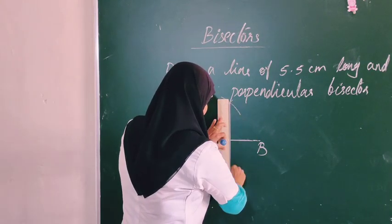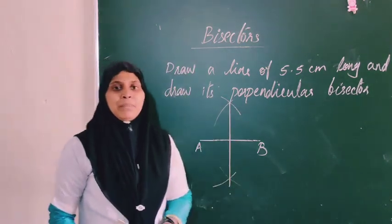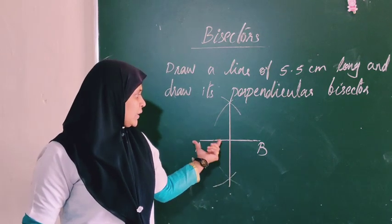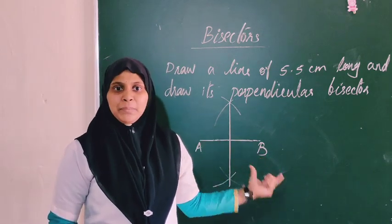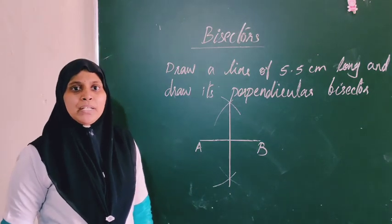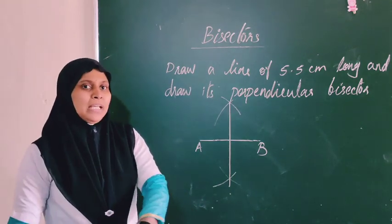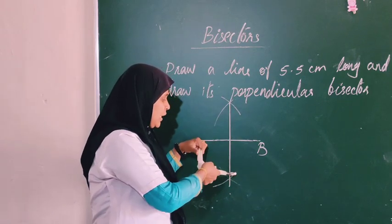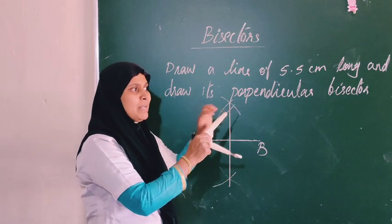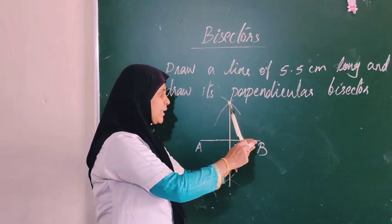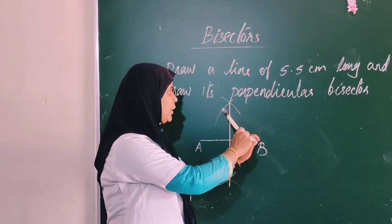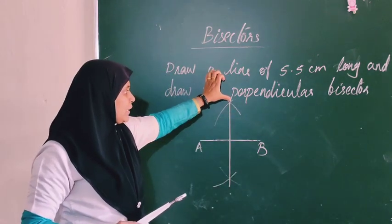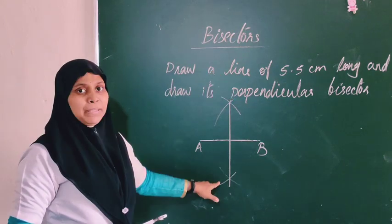This line joining the two crossing arcs is the perpendicular bisector of AB. First, we find the midpoint of the line. We take more than half of this line as the compass radius and draw arcs from both ends.